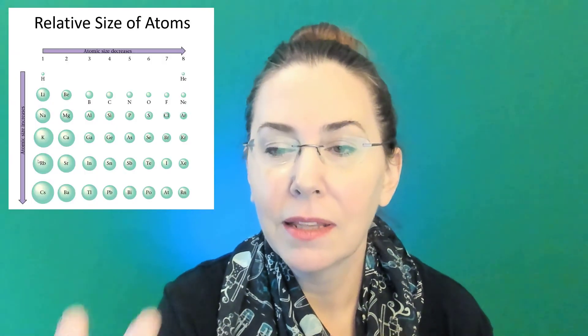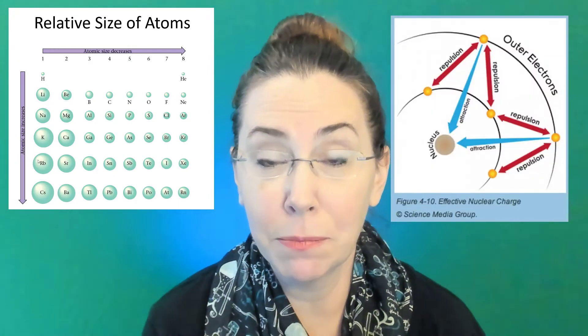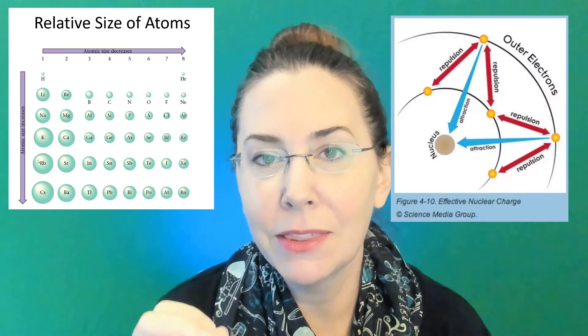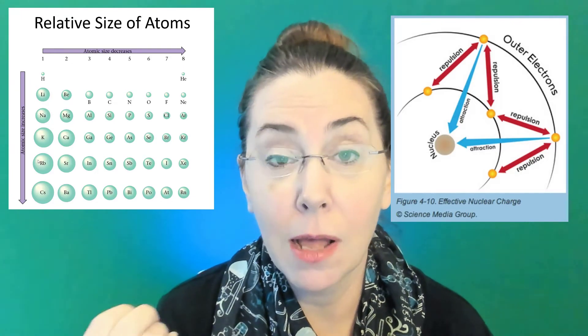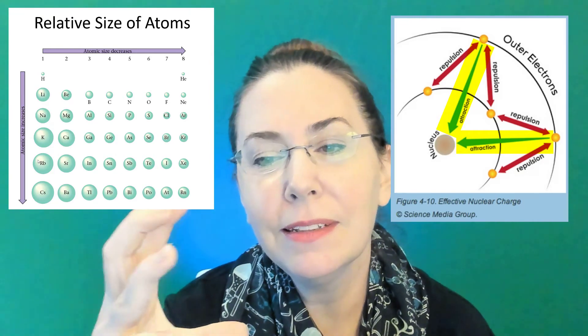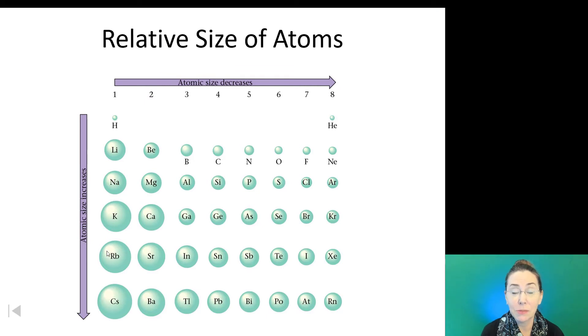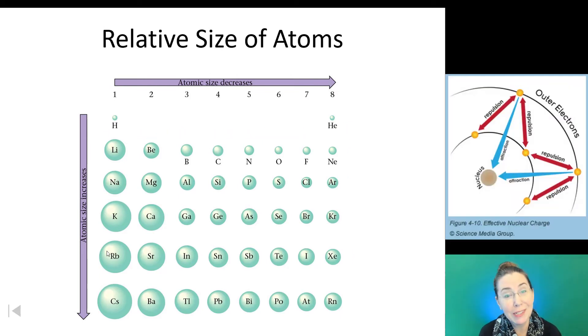As we move across the periodic table, those electrons are becoming more and more attracted to the increasing number of protons in the nucleus. Because as our atomic number goes up, our number of protons are also going up. So, it's squeezing down just a little bit. So, each element as we move from left to right is getting a little bit smaller. Because that attraction between the protons in the nucleus and the valence electrons is increasing as we shove more protons into the nucleus.